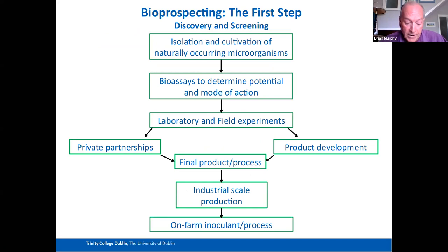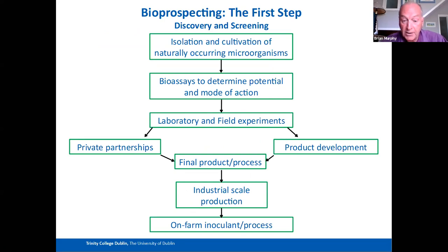The key point in the process is at the experimental stage, where most of the isolates fail and very few actually pass. That's how we narrow down the thousands we start off with to the several tens we end up with at the end.